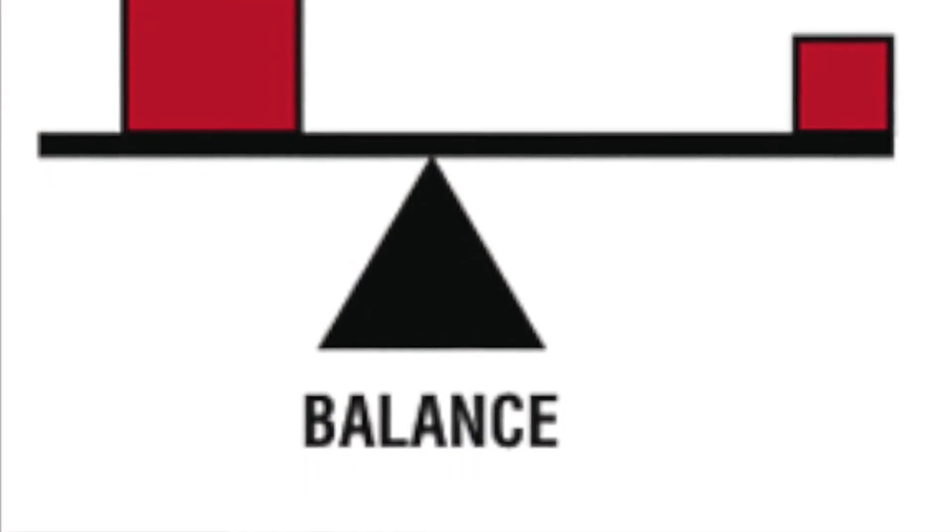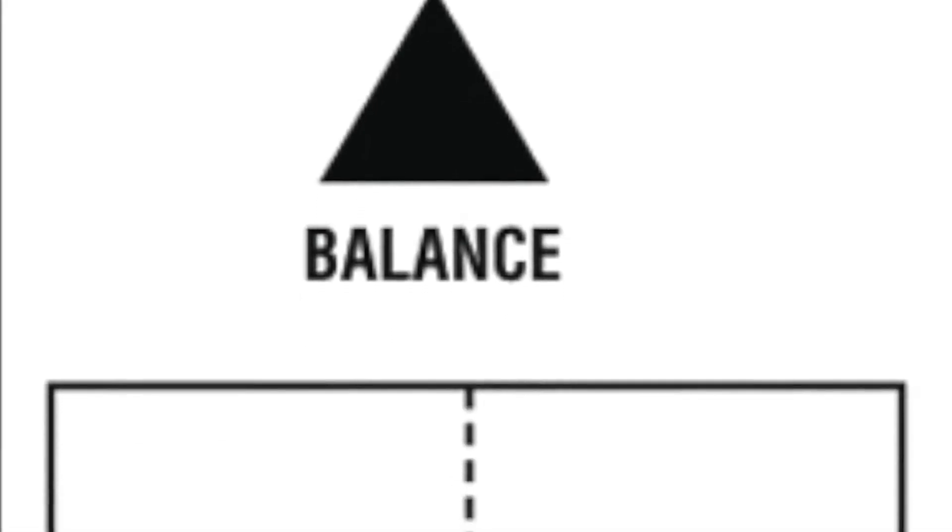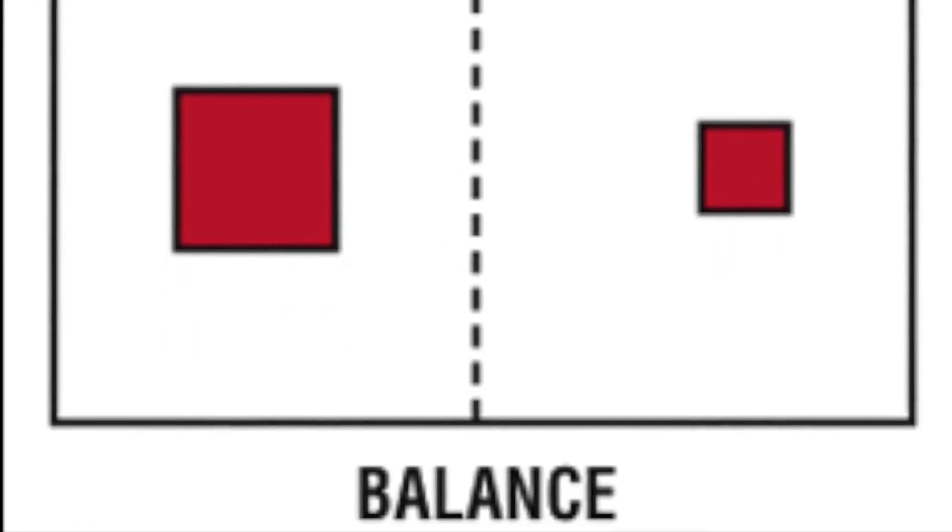Likewise, in design, two bodies with all else equal except size will balance only if the smaller one is placed further from the pivotal point or in the center of the field of vision.